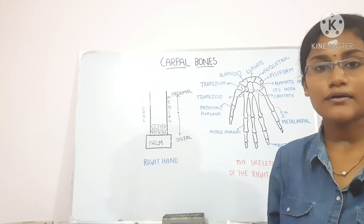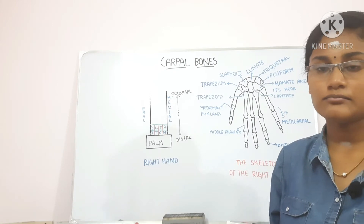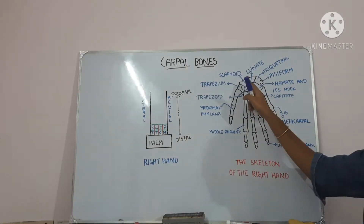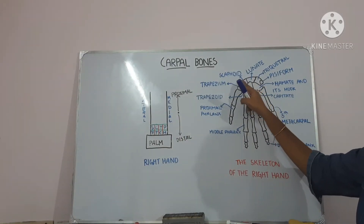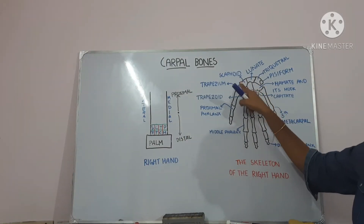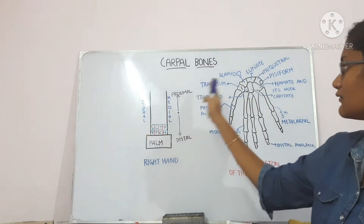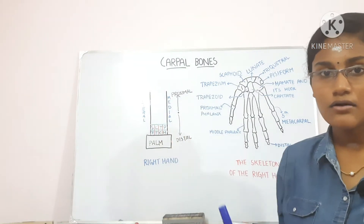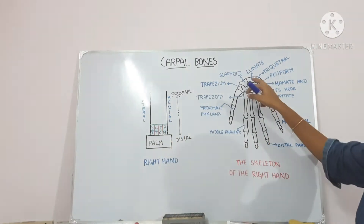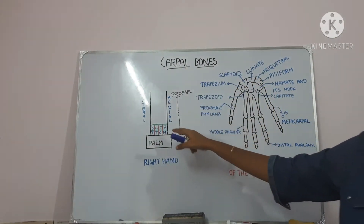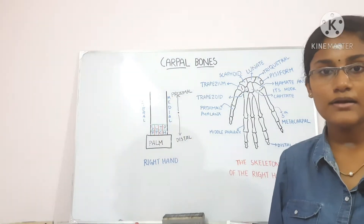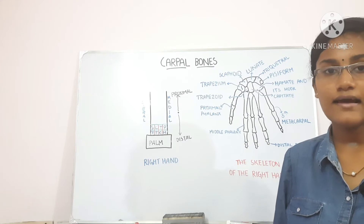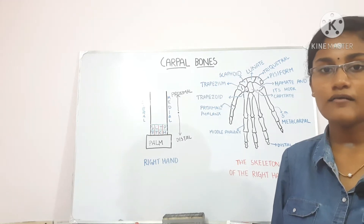Now let us talk about each of these bones individually. The scaphoid bone is present over here and on its lateral end it has a tubercle. The lunate bone is crescentic or moon shaped. The triquetral bone is pyramidal and on its palmar surface on the distal end it has an isolated oval facet.